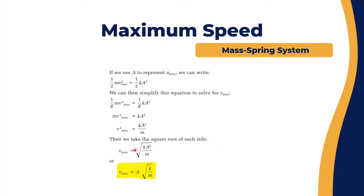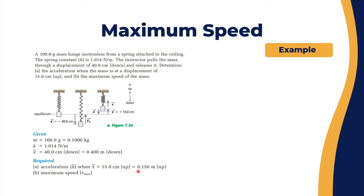Taking the square root, A squared becomes A outside the square root, so the maximum speed v_max for the mass-spring system can be represented as A multiplied by the square root of k over m.